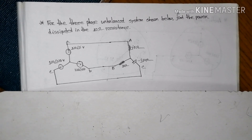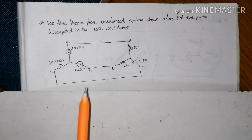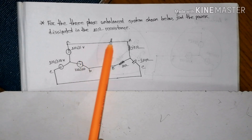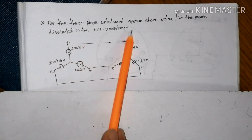For the 3-phase unbalanced system shown below, find the power dissipated in the 10 ohm resistance.